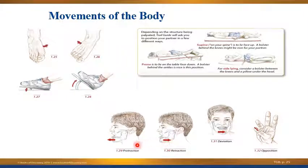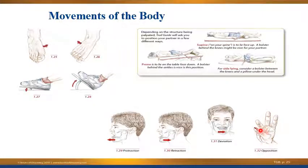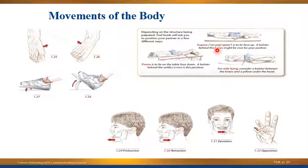The motions of protraction and retraction occur at the mandible — protraction means the jaw pushes out, retraction means it comes back. You can also laterally deviate the mandible. Something unique that occurs at the hand is opposition, which occurs at the carpometacarpal joint of the thumb — it's basically when the thumb pad comes towards the last finger. Finally, some positional terms: supine means lying on your back face up, prone means lying face down, and side lying means lying on your side.